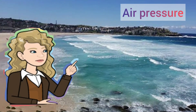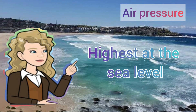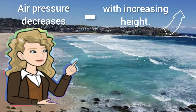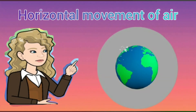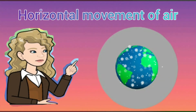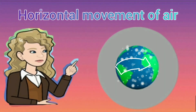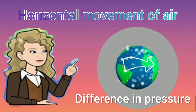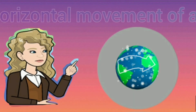Air pressure is highest at sea level and decreases with increasing height. Now let us know about the horizontal movement of air. Near the earth's surface, air moves from one place to another if there is a difference in pressure.